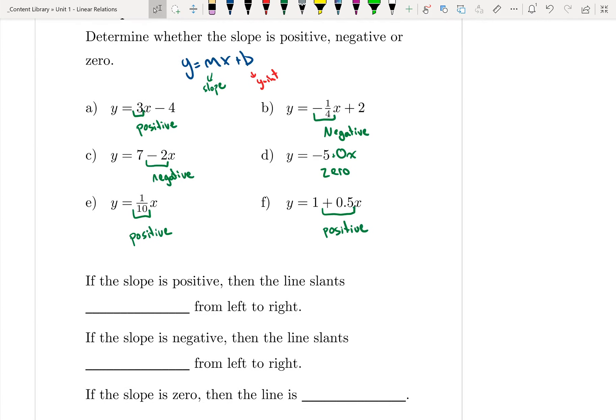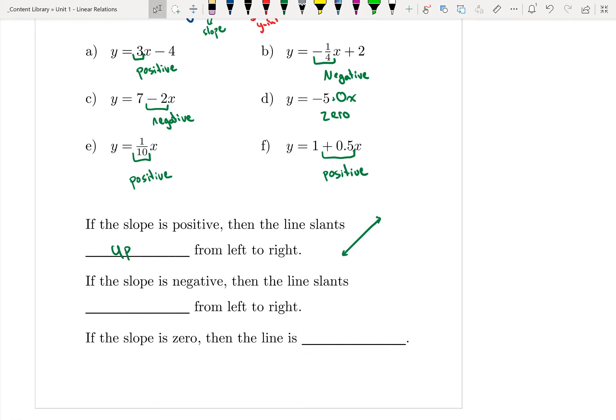If the slope is positive, then that means that the line slants up from left to right, so it'll look something like this. If the slope is negative, then the line slants down from left to right, so it'll look something like this. And if the slope is zero, that means that the line is horizontal or flat.